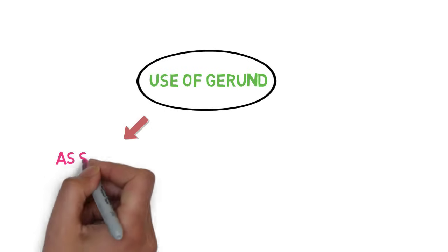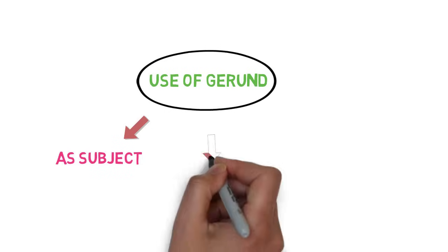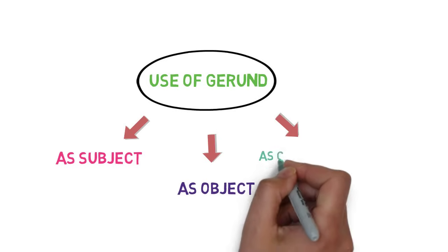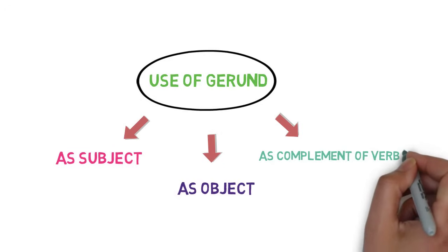We looked one use of gerund which is as a subject. Now, second use of gerund is as an object. And third is as a complement of verb to be.